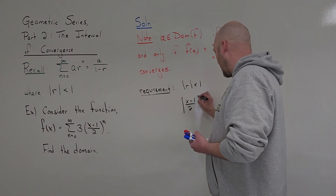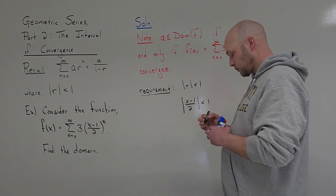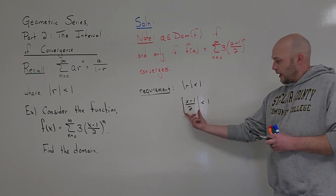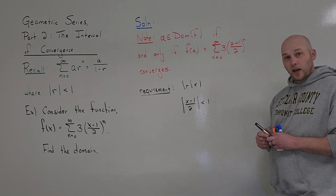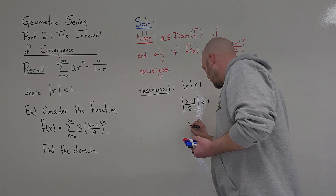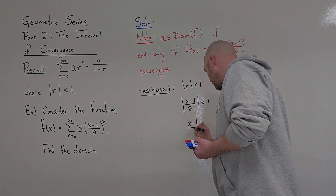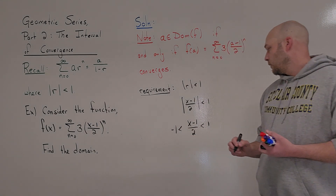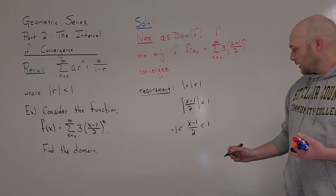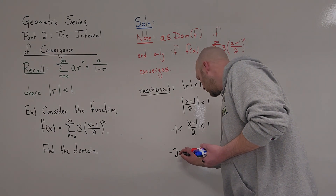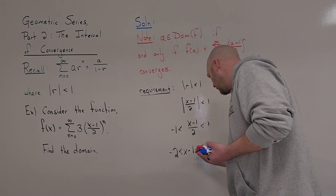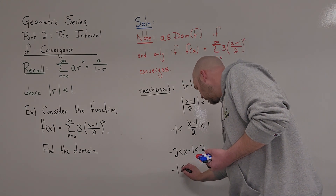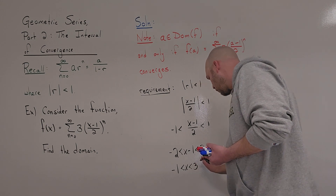Now I have to solve this absolute value inequality. When the absolute value is on the smaller side of the inequality, I rewrite it as: (x minus 1) over 2 has to be between negative 1 and 1. Multiplying through by 2 gives me negative 2 is less than x minus 1 is less than 2.